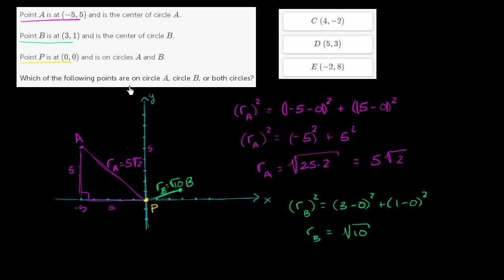Now they ask us which of the following points are on circle A, circle B, or both circles. All we have to do is check these points. If a point is the square root of 10 away from point B, then it's on circle B. If it's 5 square roots of 2 from point A, then it's on circle A. A circle is a locus of all points that are a radius away from the center. Let's try these out one by one.